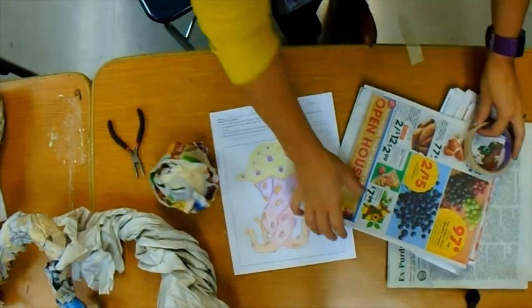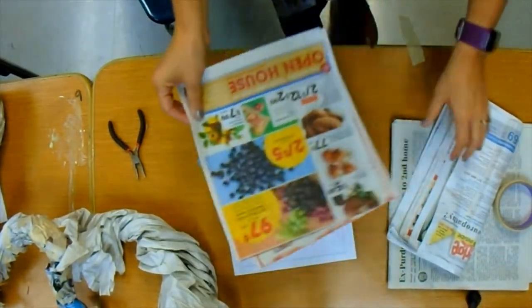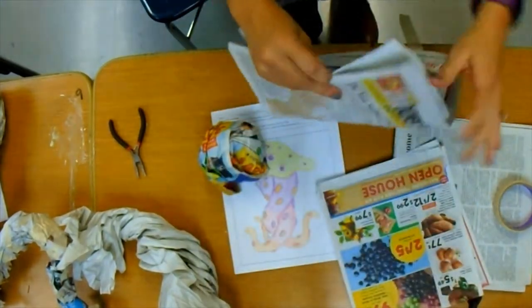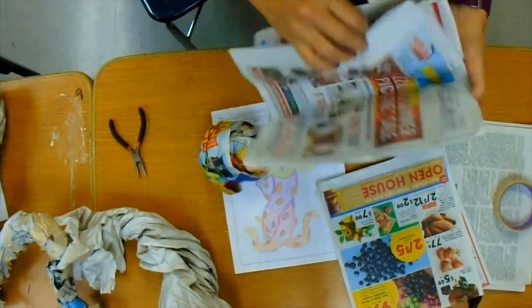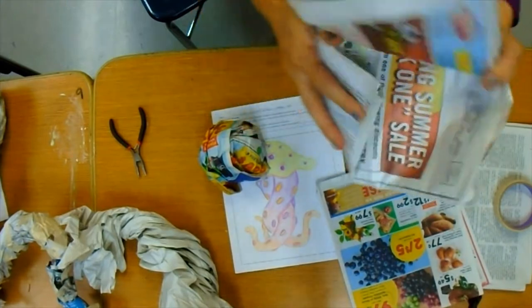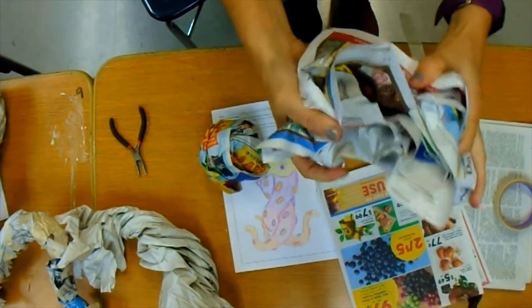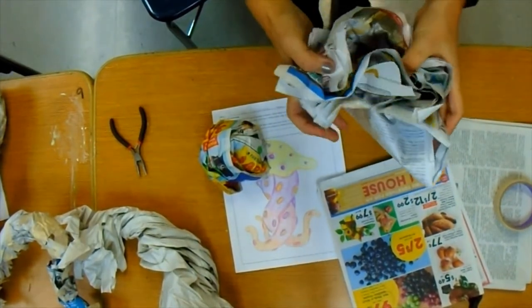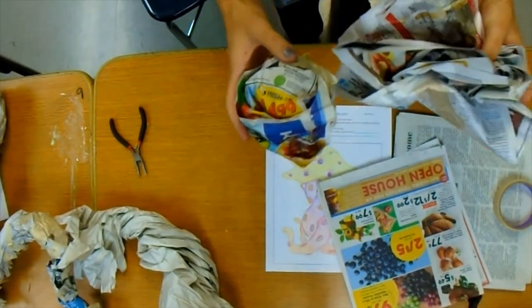What I don't do is I don't crumple an entire sheet or rather an entire section of newspaper. I'm not going to squish that because see how this doesn't become round? That's only going to become round when you do it a single sheet at a time.